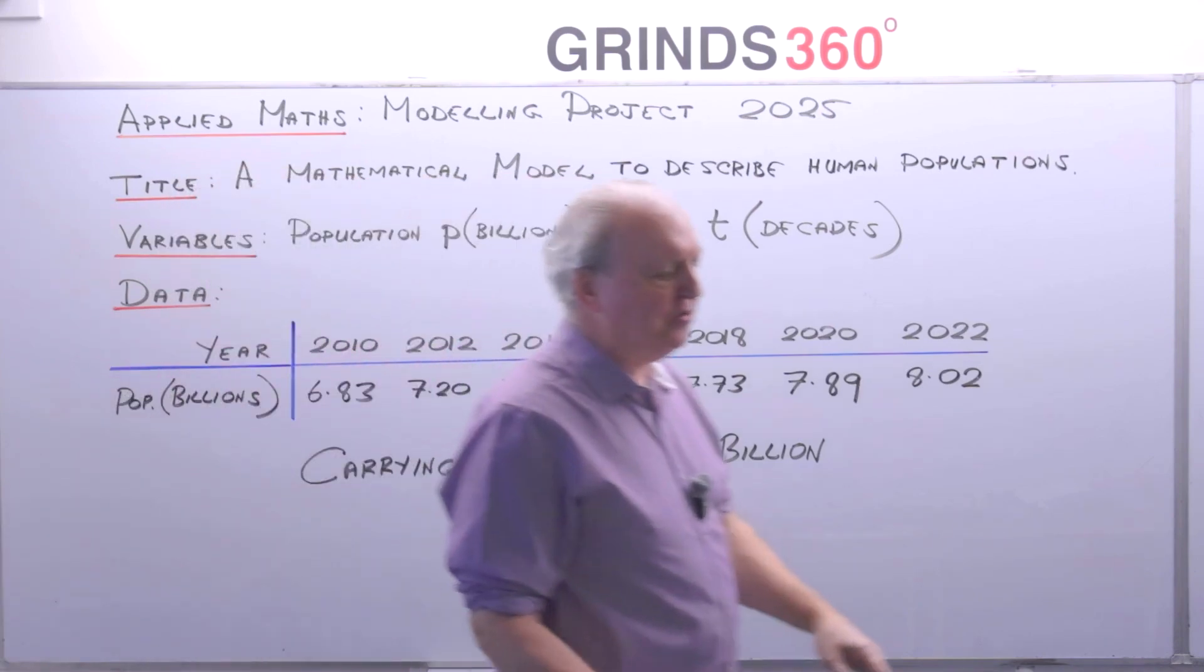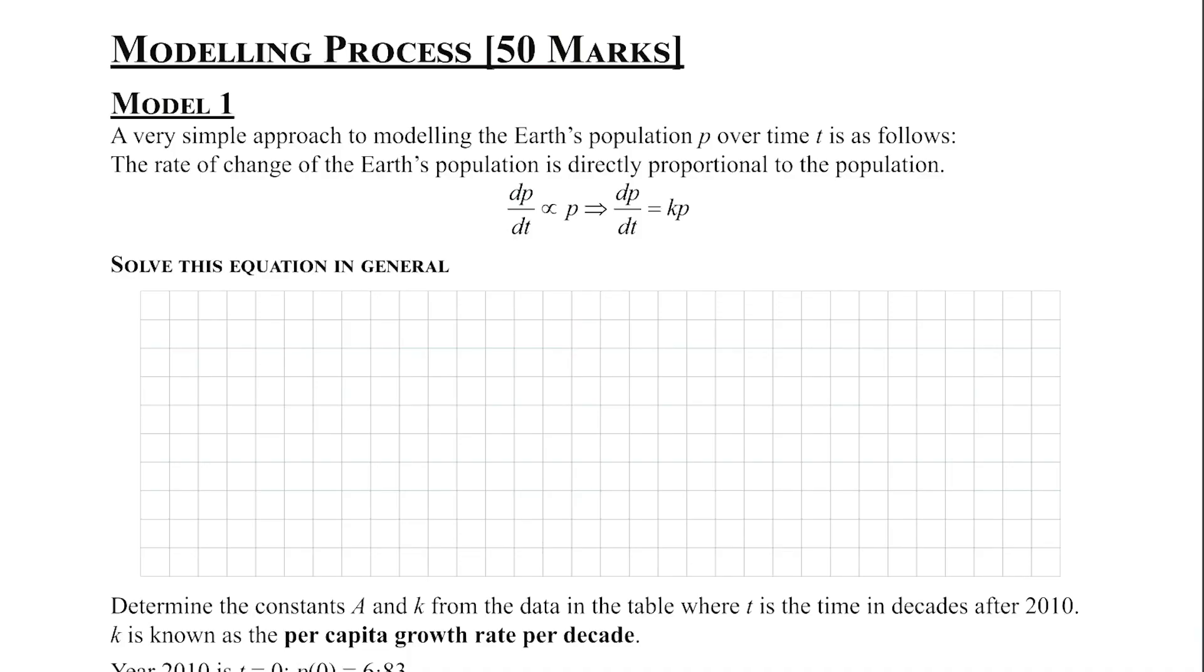So let's go to our notes and you have model number one. So this is a very simple approach and all we're going to say here is that the rate of change of the earth's population is directly proportional to the population. So how quickly it increases depends on how many people are already there. That makes sense.